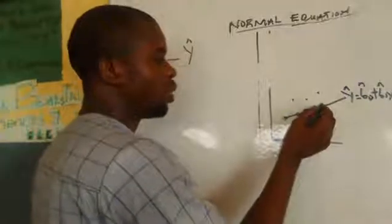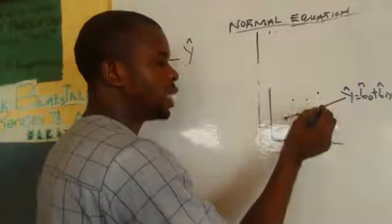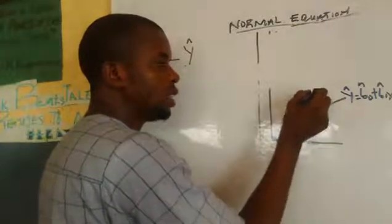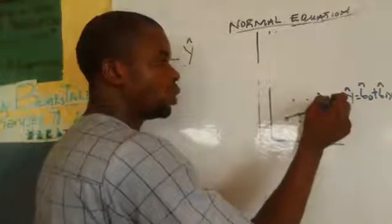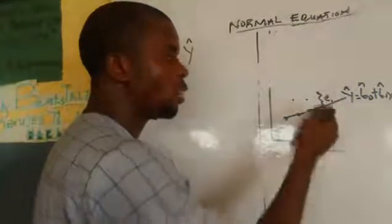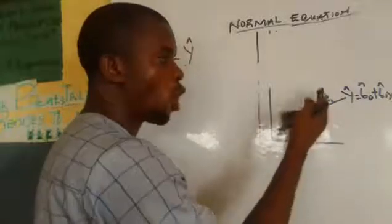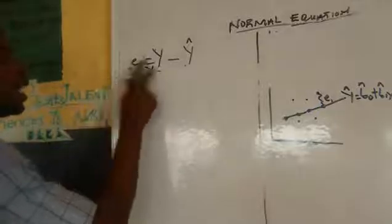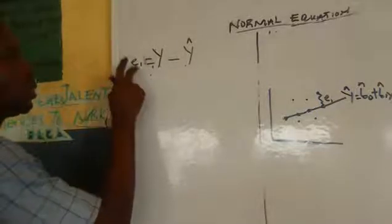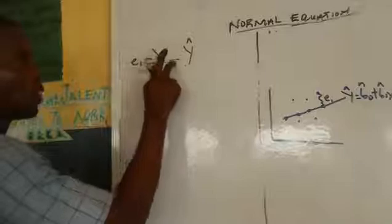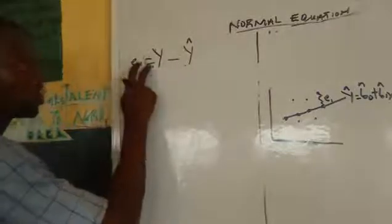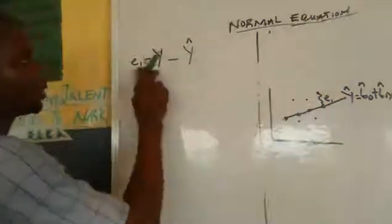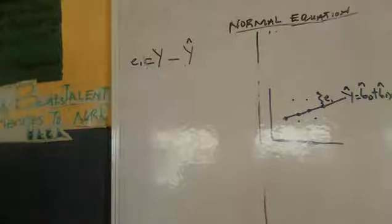As you can see, there is a point on the estimated line and a point for the observed value. The difference between these two points is what we call deviation. So deviation equals observed minus estimated. This is what I'm going to use to get our normal equation.